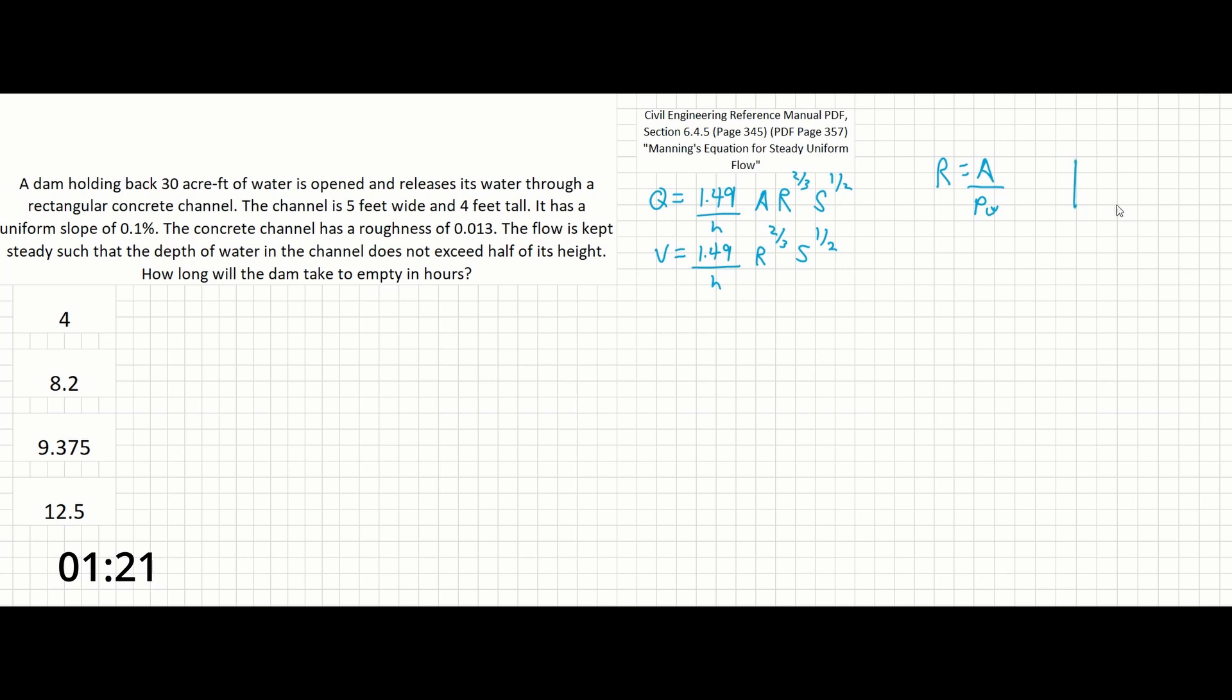If you're having trouble visualizing wetted perimeter, it's the length of water that comes in contact with the channel. So in this case, Pw for a rectangular channel is going to be w plus 2h. And in this problem, since it's all to the two-thirds, that's going to be both of those as well.